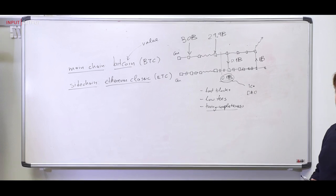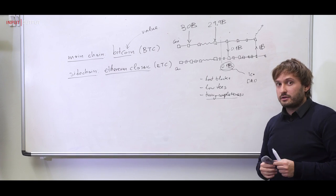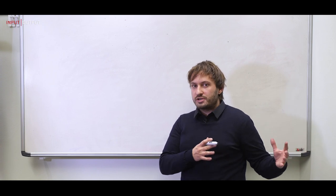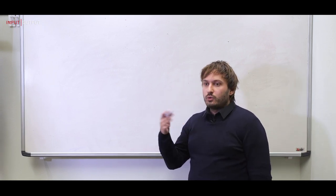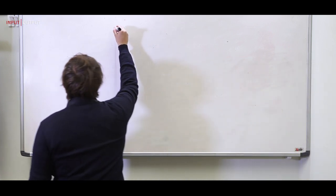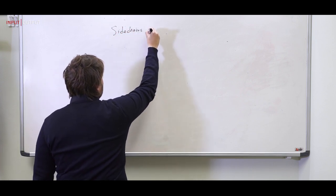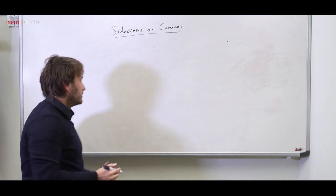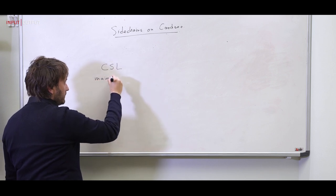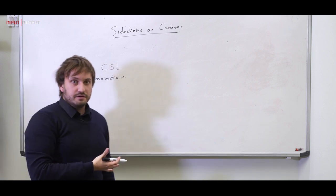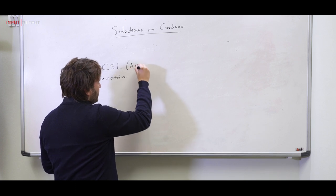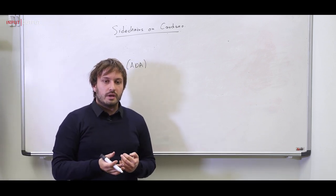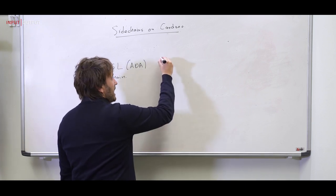Now let's move on to how Cardano plans to use sidechains and how we will implement sidechains in Cardano. Now that we've explained how sidechains and main chains would work on traditional cryptocurrencies, I'll explain how we plan to do them on Cardano. Cardano already has one main chain — the Cardano settlement layer main chain. This is where ADA lives, the cryptocurrency of Cardano. This is what we call the home blockchain of ADA — where ADA is created and normally maintained. It also has a series of blocks.